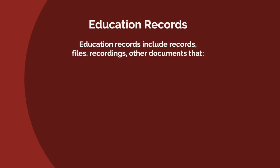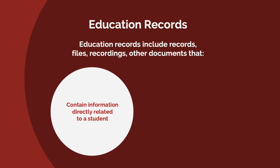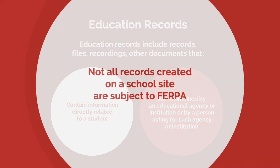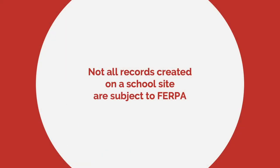FERPA applies to education records. Education records are records, filings, recordings, or other documented information which contain information directly relating to a student and are maintained by an educational agency or individual who works for an educational agency. It can include health information, such as immunization information, or testing and evaluation related to an individualized education program, also known as an IEP. FERPA does not treat health information in an education record any differently than it does other information commonly found in an education record.